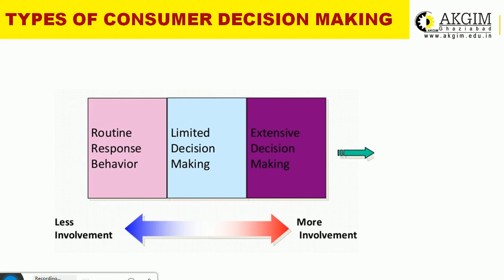For extensive decision making, the consumer is unfamiliar with both the product and service category — not informed about the product or service — and the situation requires extensive information search and evaluation. The purchase process involves significant effort. The consumer must gather much information about different decision criteria while comparing product categories. These goods are high-involvement, expensive, infrequently bought, and the perceived risk is higher. Consumers are generally first-time purchasers. Examples include buying jewelry, electronic goods, or investing in real estate.